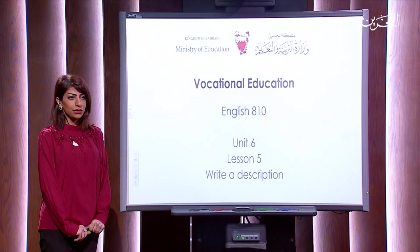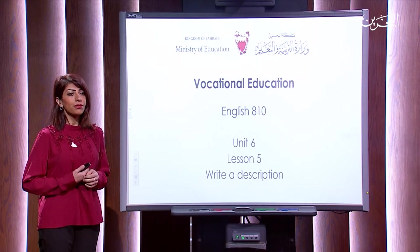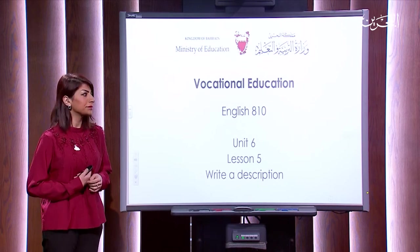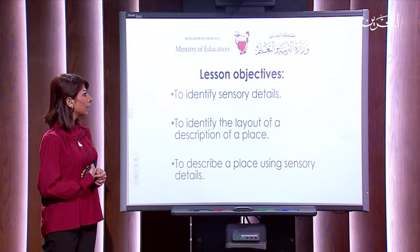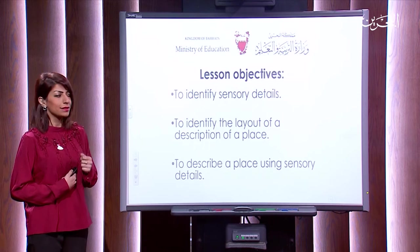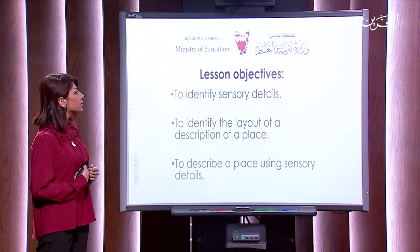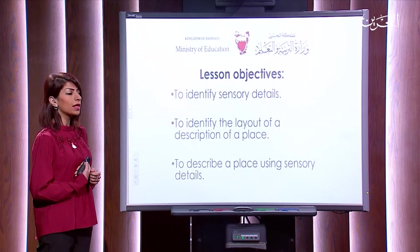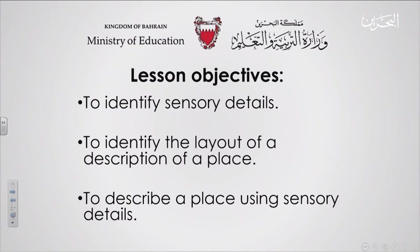Welcome again to English 810 for vocational education studies. Today we're going to have Unit 6, Lesson 5, which is 'Write a Description.' By the end of this lesson, we're going to achieve three main objectives: to identify sensory details, to identify the layout of a description of a place, and to describe a place using sensory details.